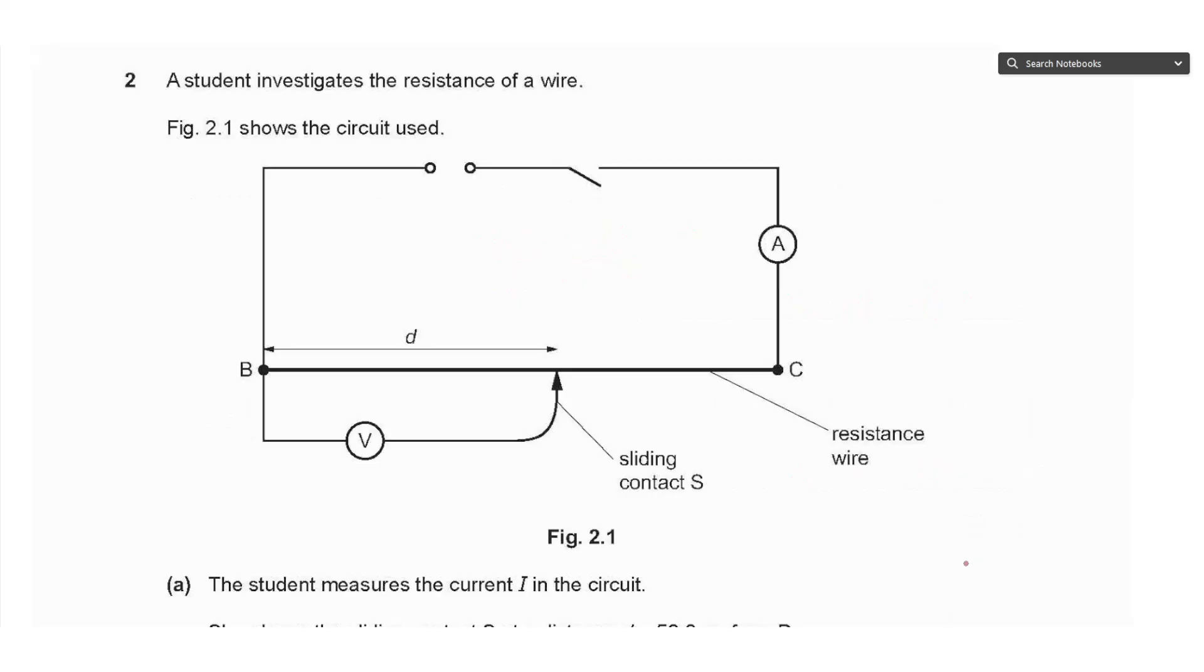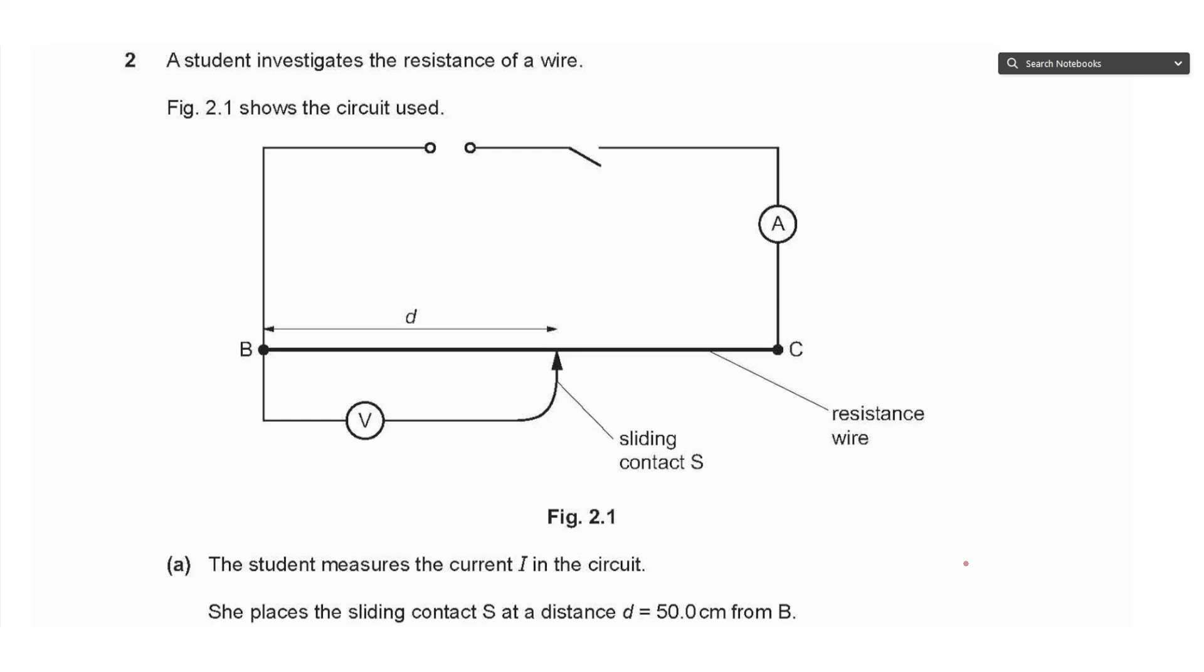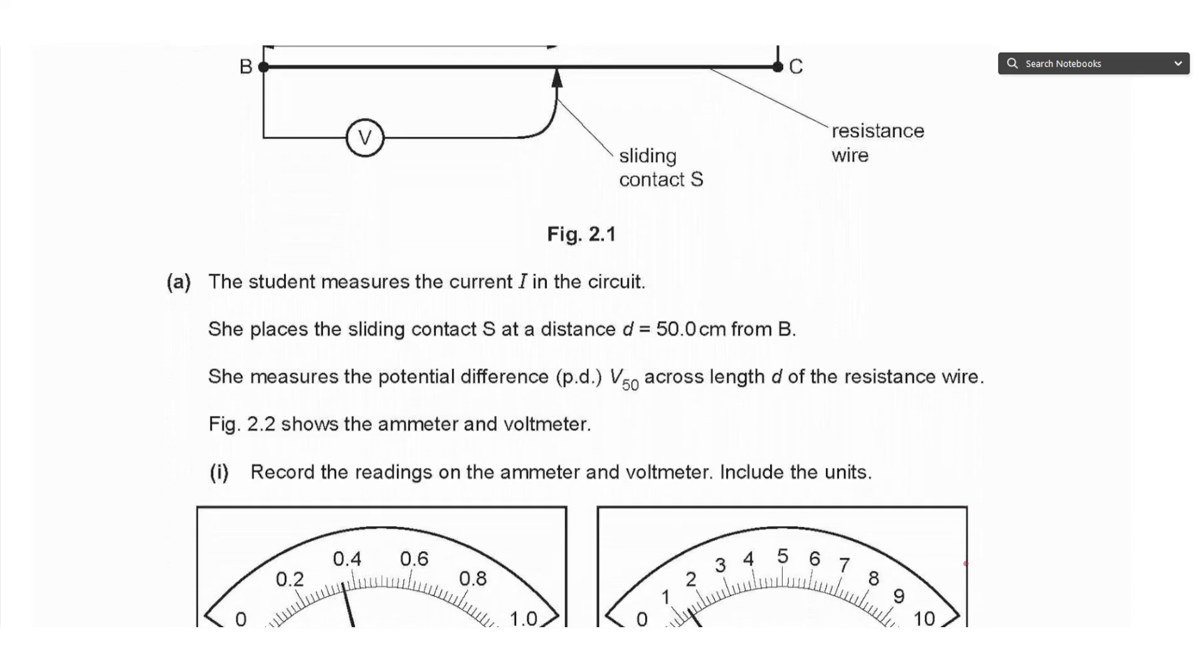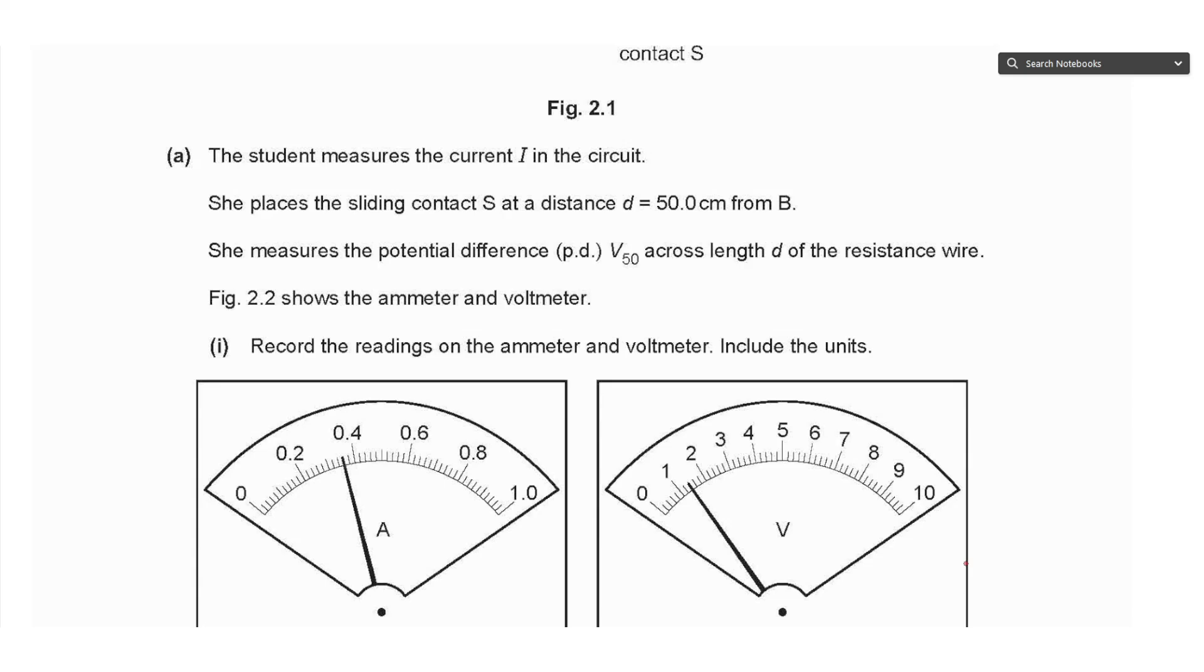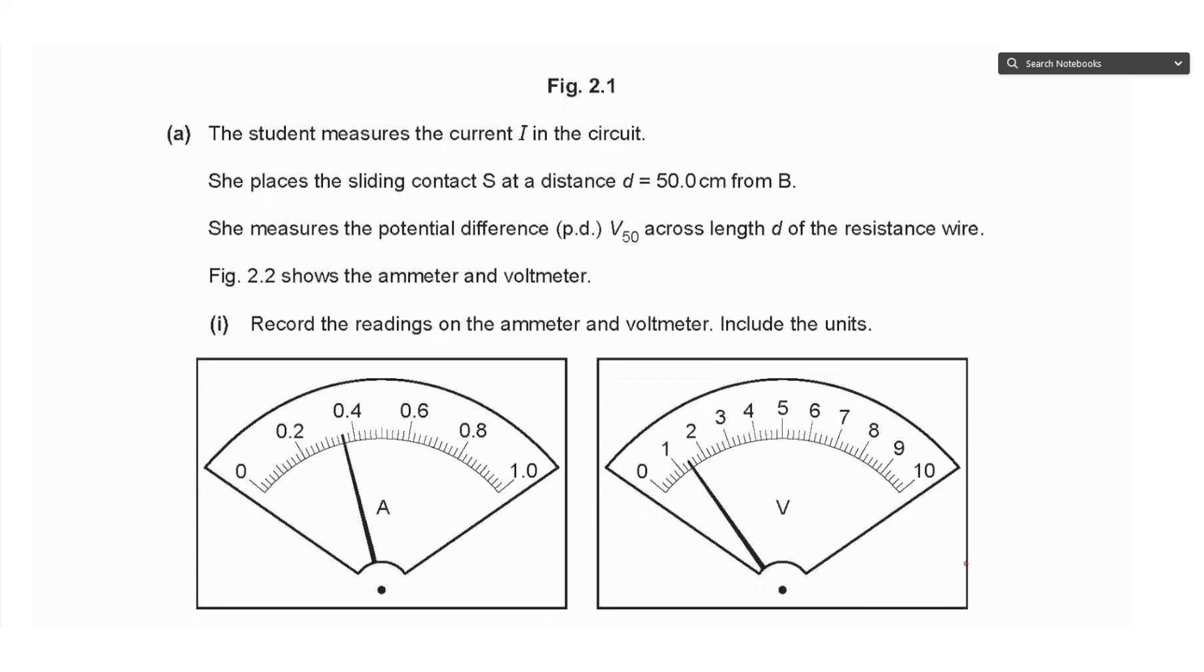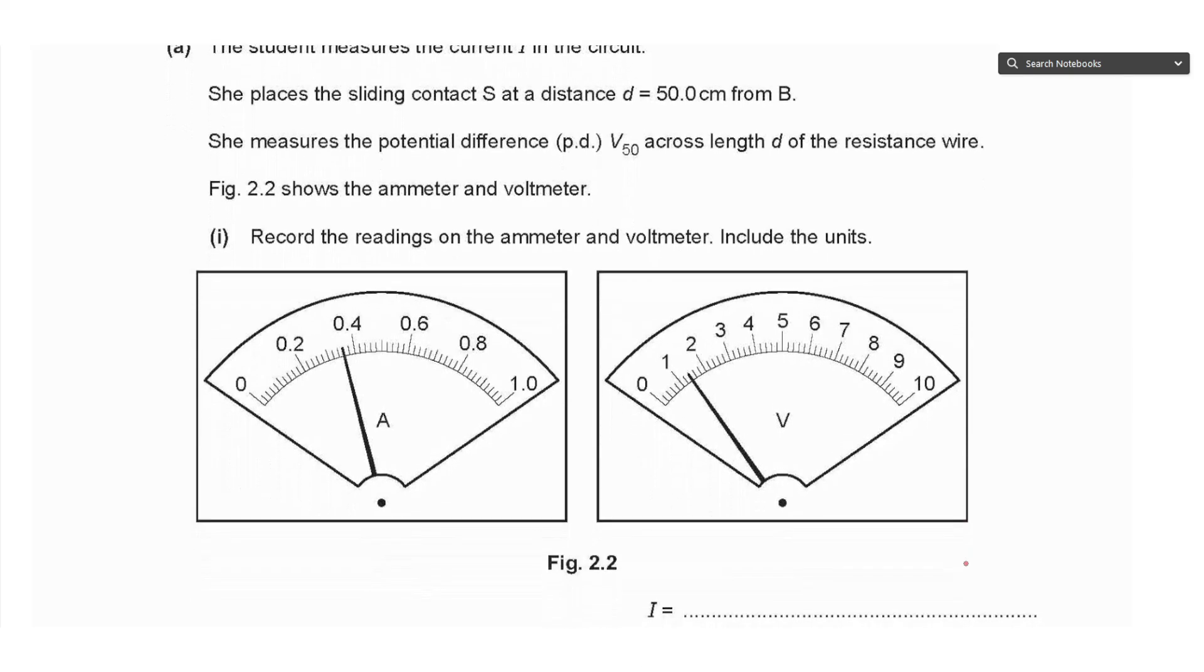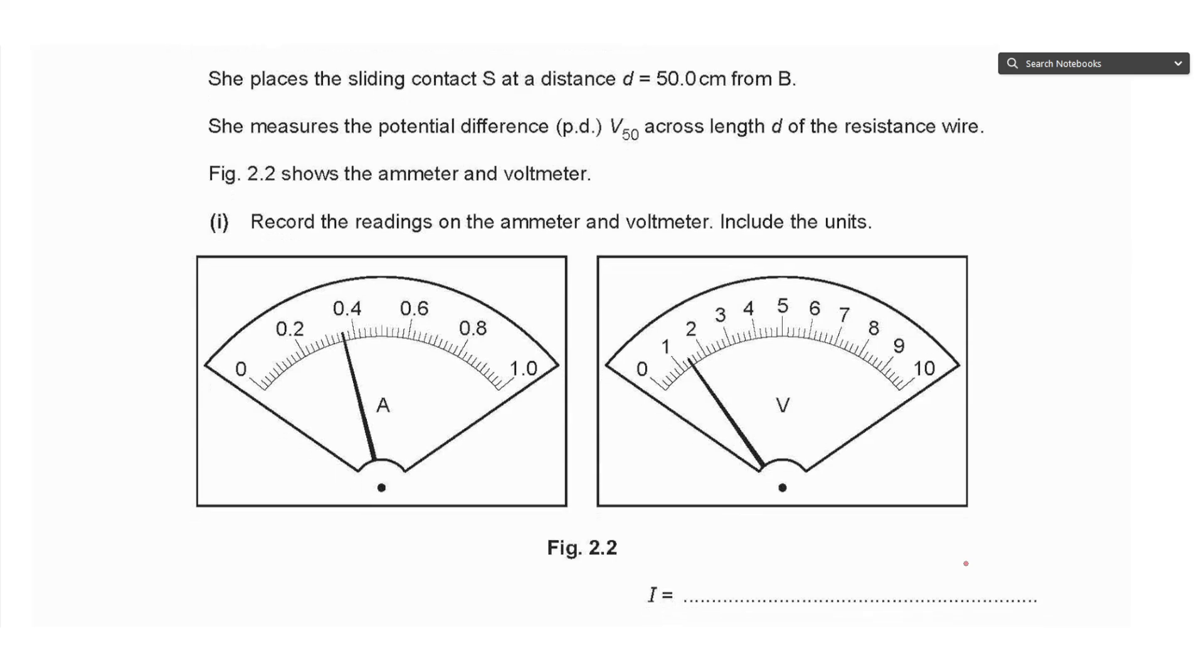Question 2: We have a power supply, switch connected to an ammeter and a resistance wire with a voltmeter connected across a part of the wire. Part A says the student measures the current i in the circuit. She places the sliding contact S at a distance d equals 50.0 centimeters from side B. She measures the potential difference V₅₀ across the length d of the resistance wire.